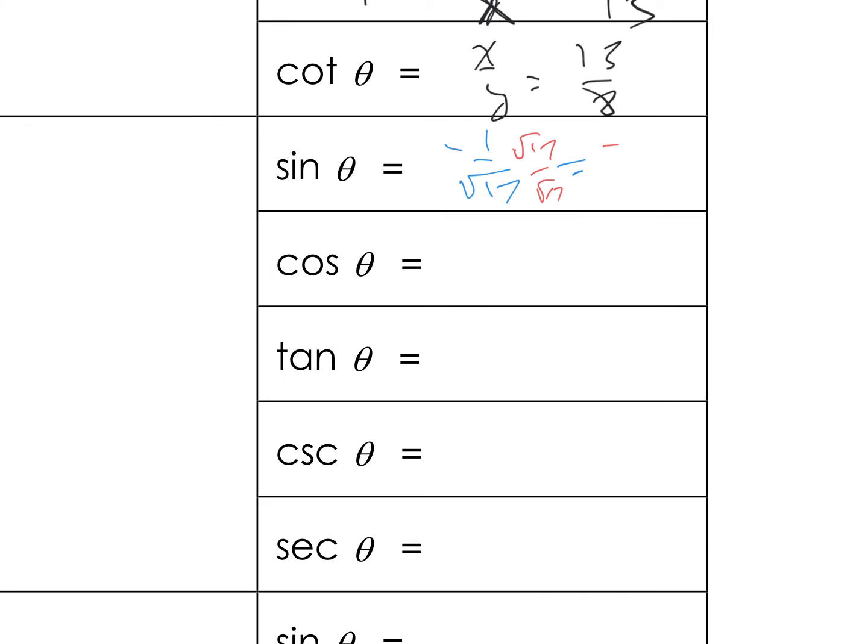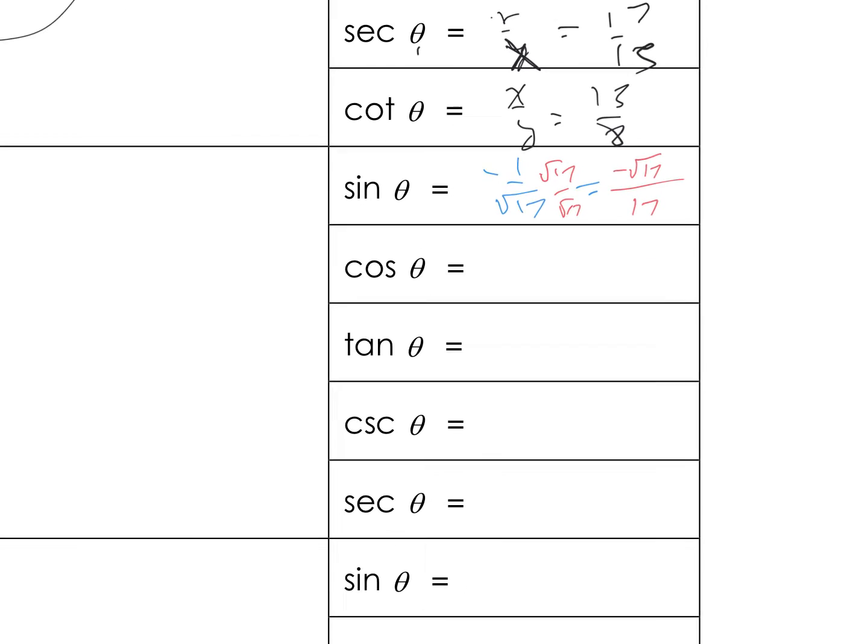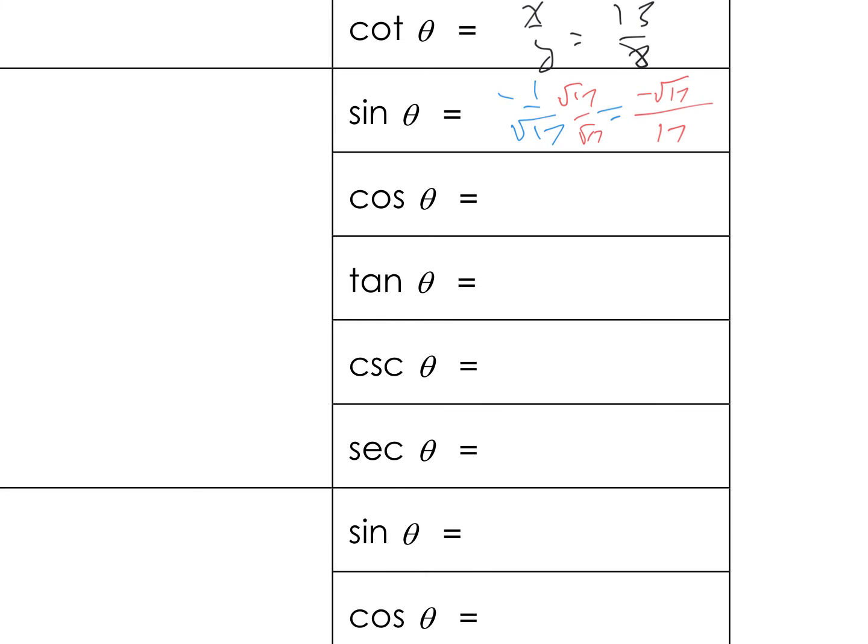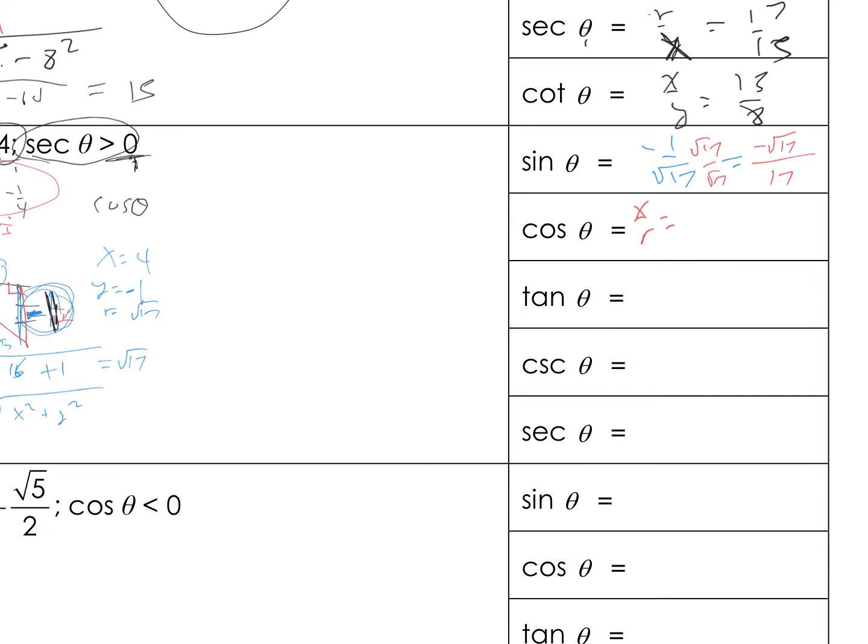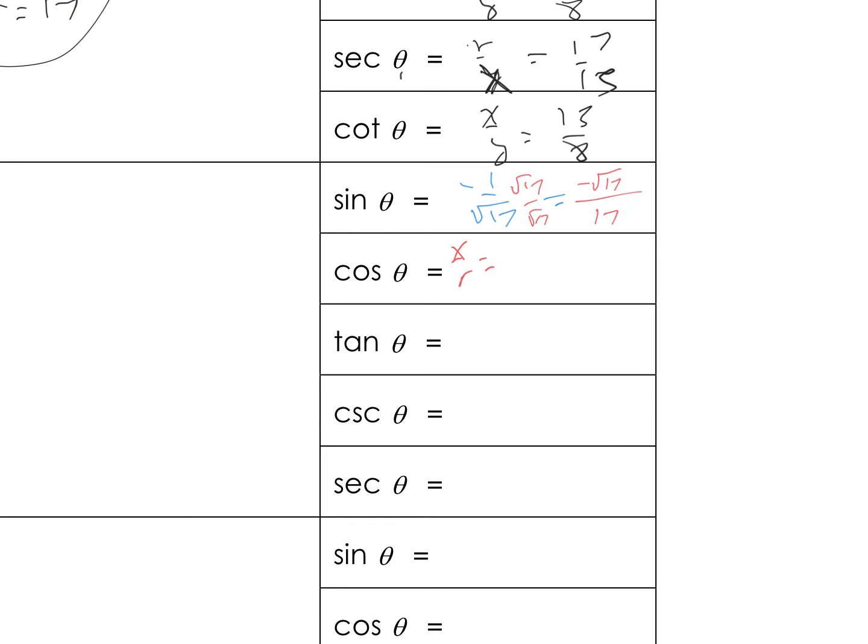Negative 1 times square root of 17 is the same thing as square root of 17 over what? Thank you, Alex. You got this, Alex. Yes, you do. You're sharp. Cosine is my X over R. 4 over the square root of 17, which turns into 4 square roots of 17 over? Did you like Alex said again? 17.